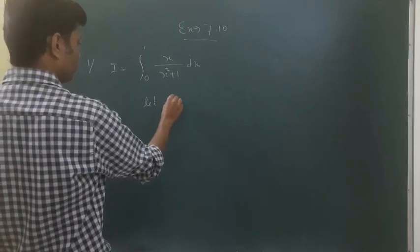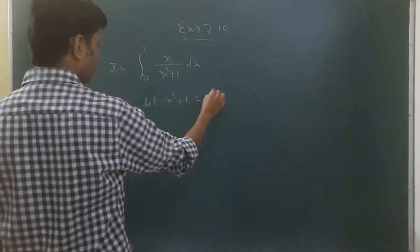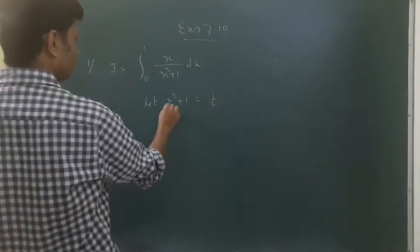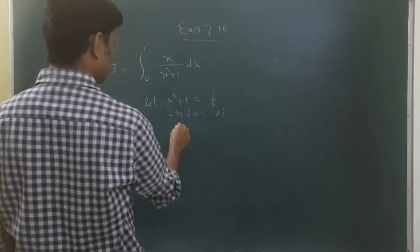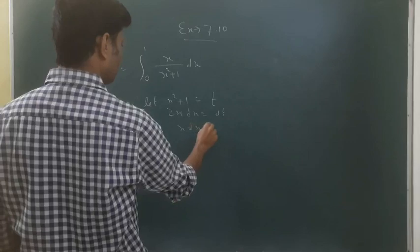Let x² + 1 equal to t. Then 2x dx equals dt, so x dx equals half dt.